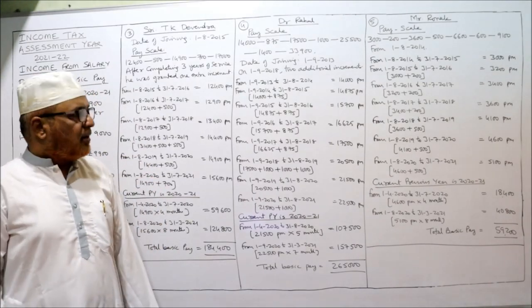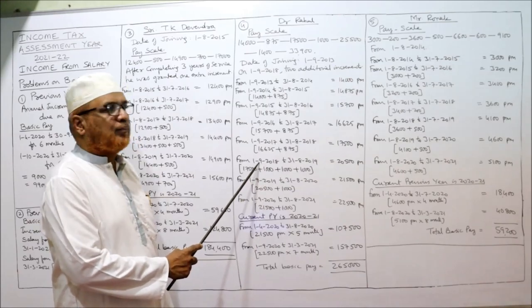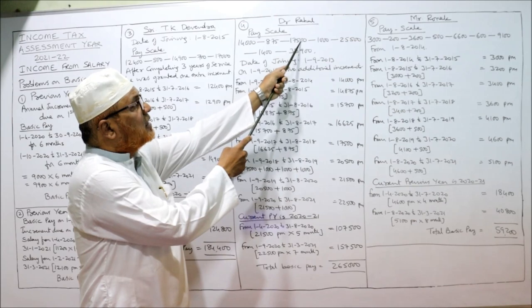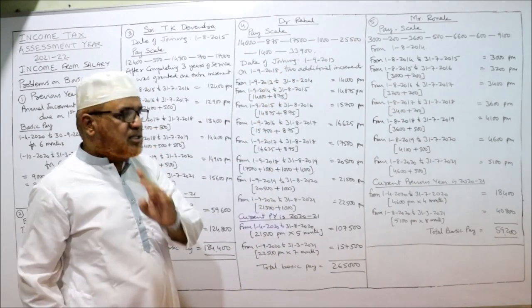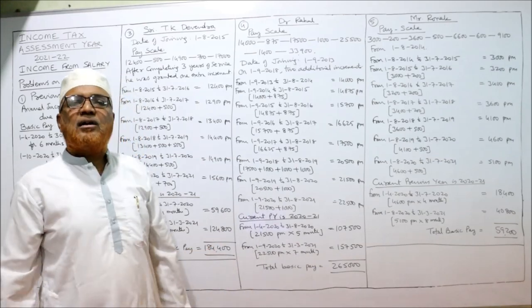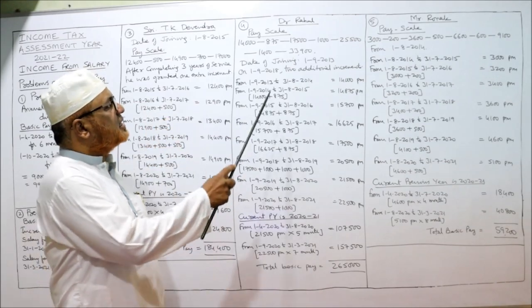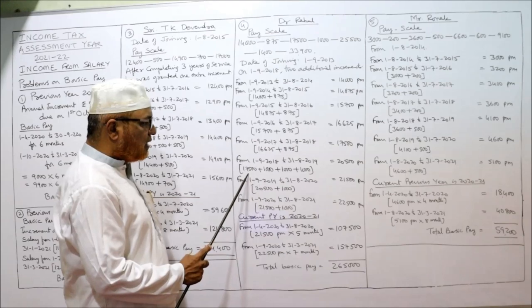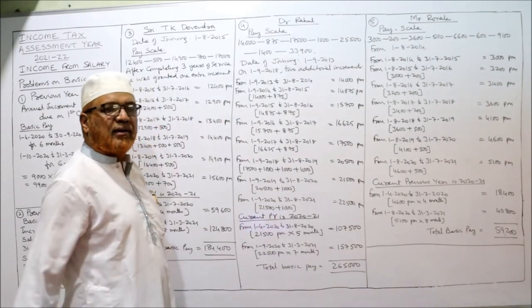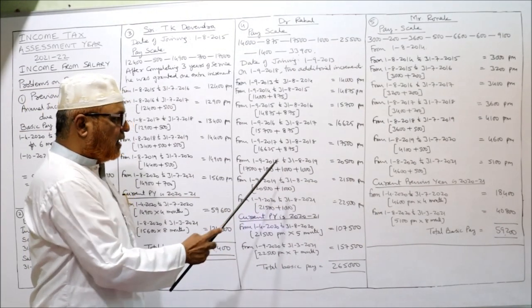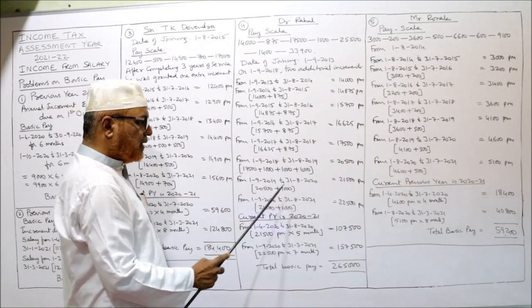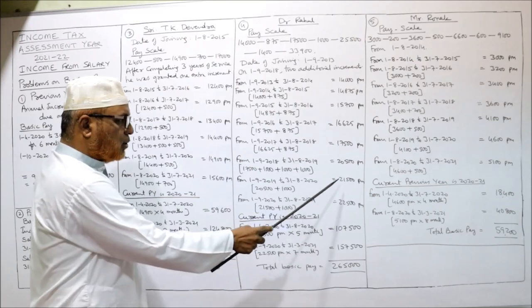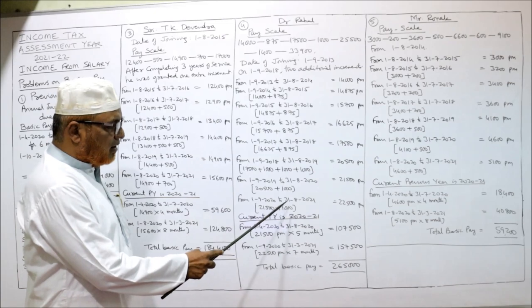From 1st September 2018 — the promotion year — two additional increments are given. After reaching 17,500, the normal increment is 1,000. But apart from the normal increment, two additional increments are given. So: 17,500 + 1,000 (normal) + 1,000 + 1,000 (two additional) = 20,500 per month during this period. Next year: 1st September 2019 to 31st August 2020 — 20,500 + 1,000 = 21,500. Then 1st September 2020 to 31st August 2021 — 21,500 + 1,000 = 22,500.